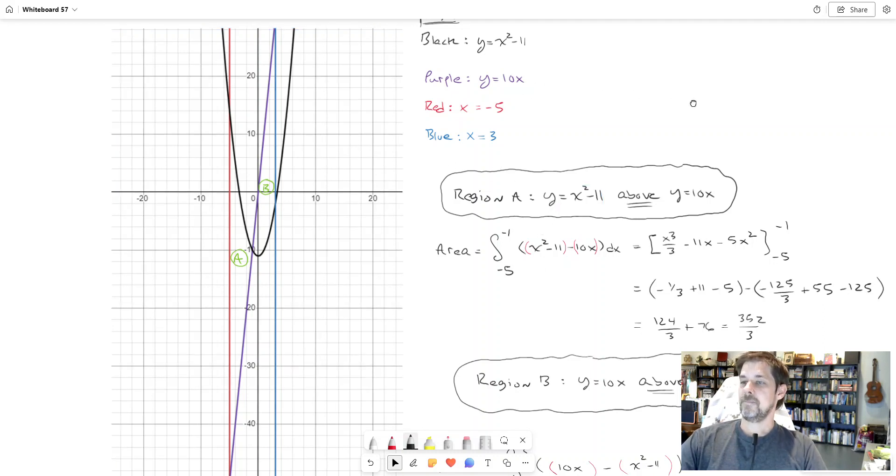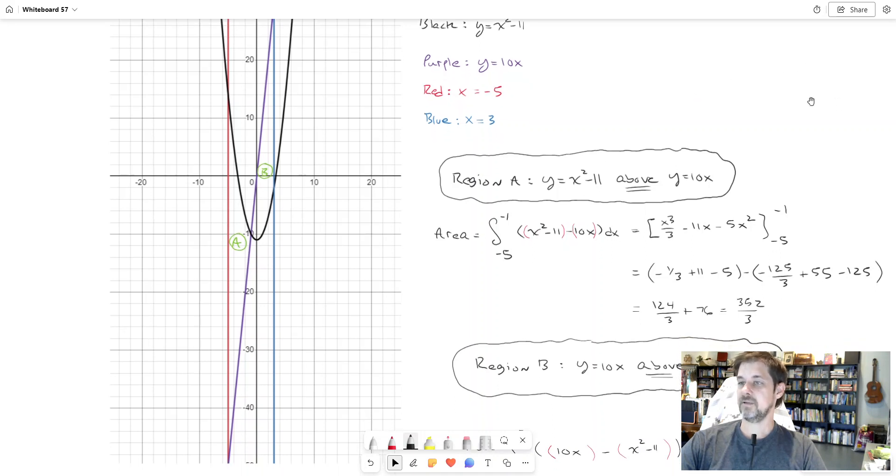Here's the breakdown. I'll calculate the area of region A and B separately because the way we set up the problem depends on which curve is above which other curve. Region A is characterized this way: the parabola which you see in black is above the line which you see in purple. When we set up our integral to evaluate it, we put the equation for the parabola and then minus the equation for the line. It's whatever is above minus whatever is below.